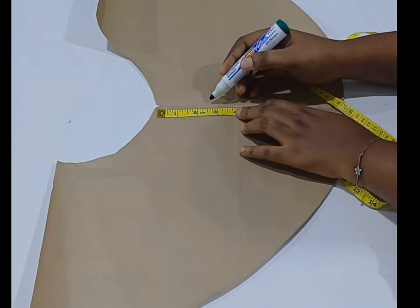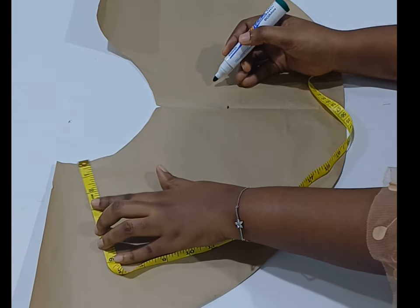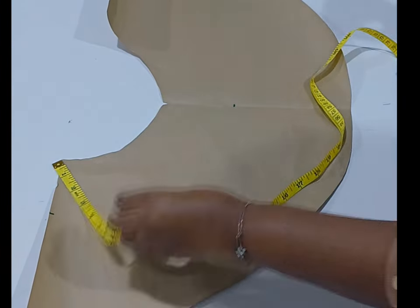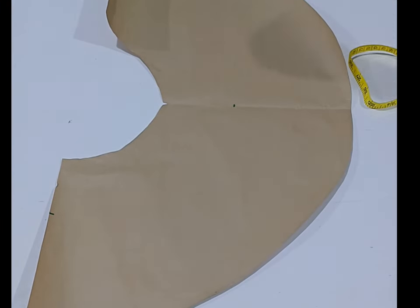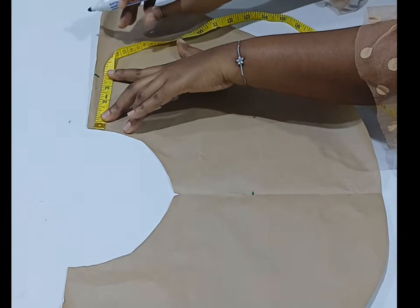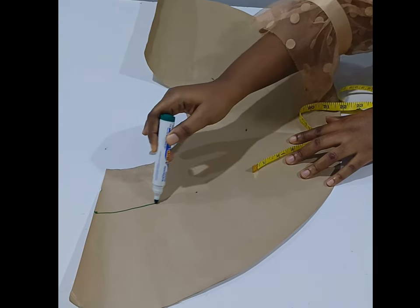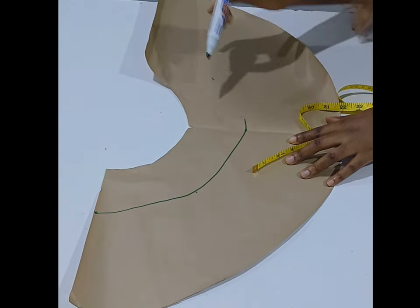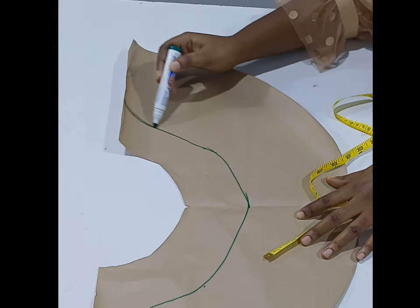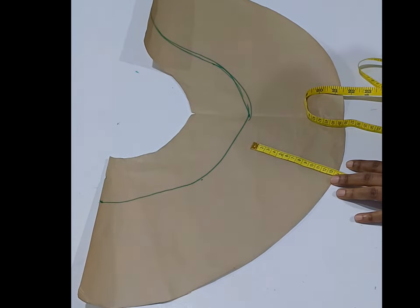Now I'm trying to measure where I want the godets to start from. The godets are going to start from this particular place down to the hemline of the skirt. I decided to pick three inches, so the godets are going to start three inches below the waist. You can measure more or less than that, you can go lower or higher. So I made a semi-circle.